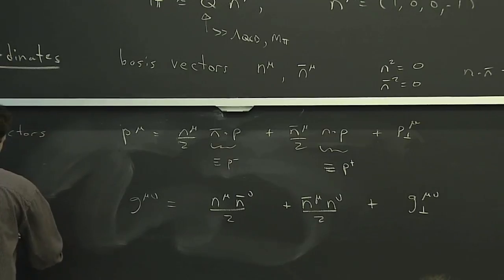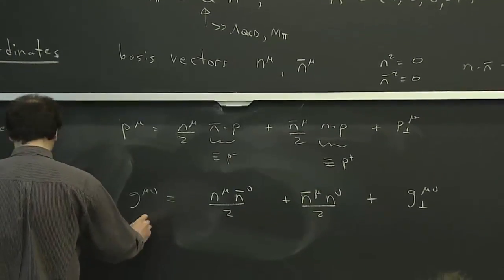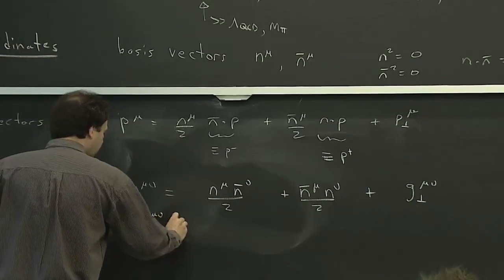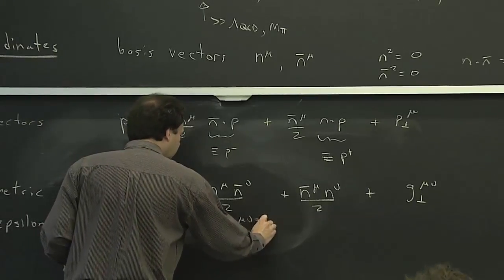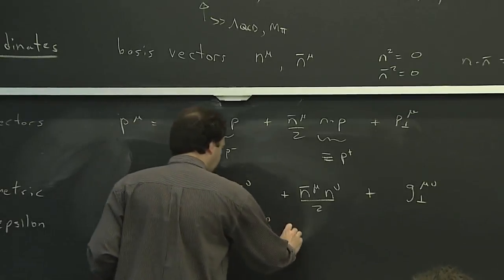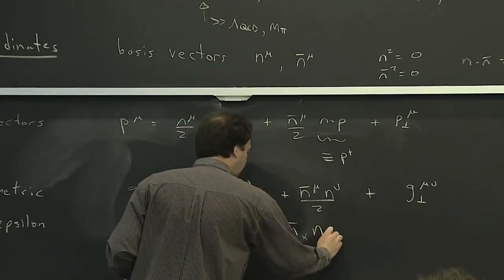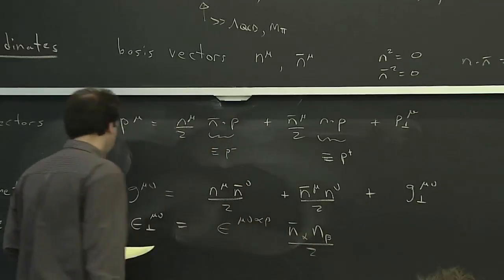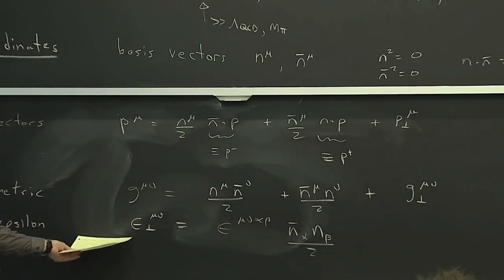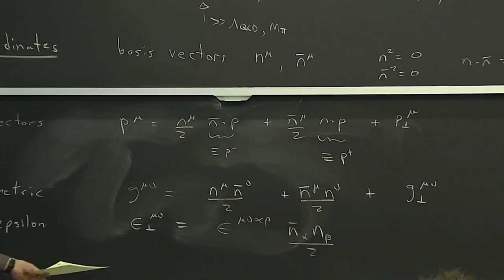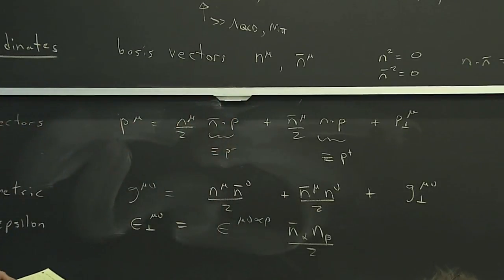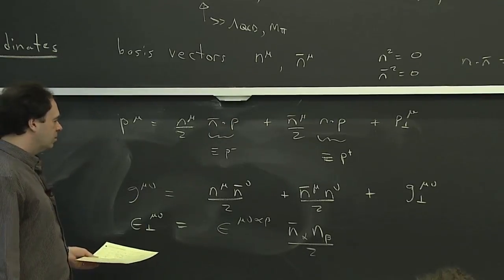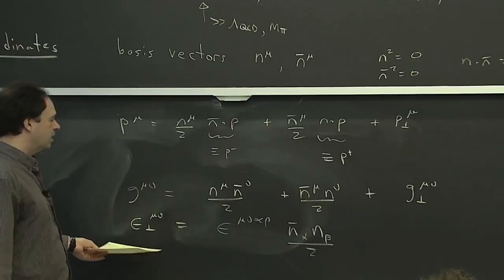You can do this with any tensor. If you have an epsilon, you can define an epsilon-perp tensor by taking epsilon and putting in an n-bar. This would be a two-component tensor that behaves in the perpendicular directions as an antisymmetric tensor. And g-perp-mu-nu would effectively live in the little subspace of the perp coordinates — it's a metric tensor there, and epsilon-perp is the antisymmetric tensor there.